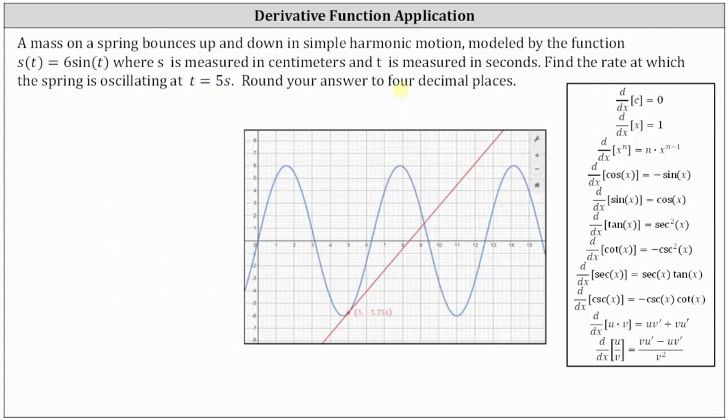Looking at the graph below, this is the graph of s(t) equals 6sin(t). The rate at which the spring is oscillating at t equals 5 seconds is the slope of the tangent line at the point when t equals 5 seconds, which is the slope of the red tangent line shown here.